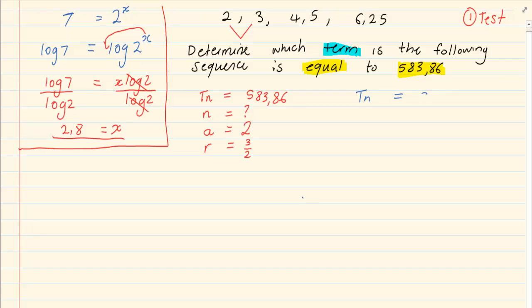Tn is equal to a times r to the power of n minus 1. Fill in all the information. 583.86 is equal to a is 2, r is 3 over 2 to the power of n minus 1.